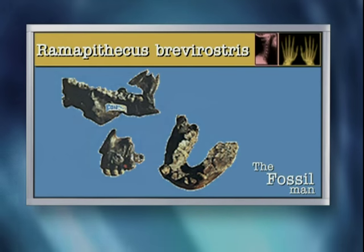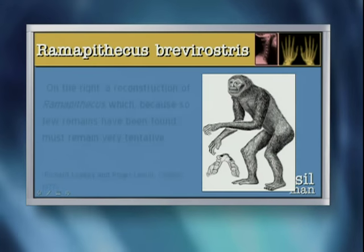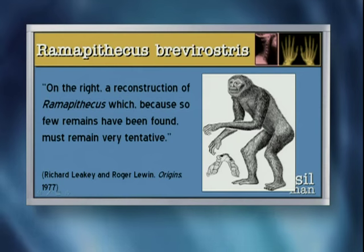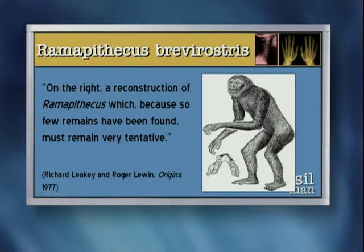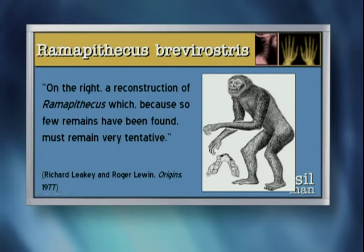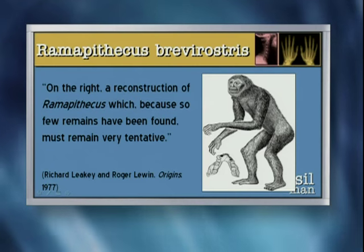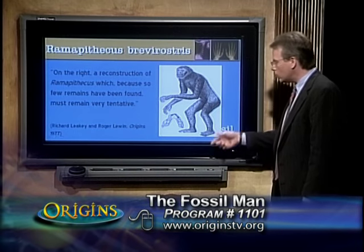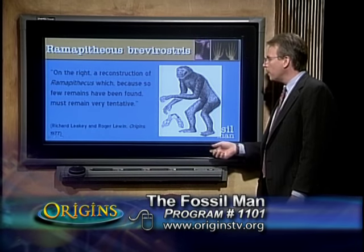Nothing below the neck at all. Richard Leakey and Roger Lewin said: a reconstruction of Ramapithecus, because so few remains have been found, must remain very tentative. We've only got those three bones - three single bones - to make up this entire species line. And yet they're going to tell us that this creature was on its way to becoming human.